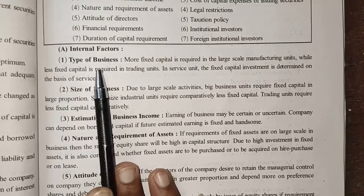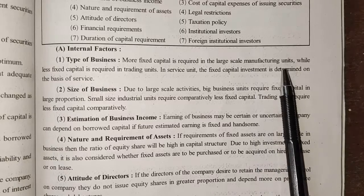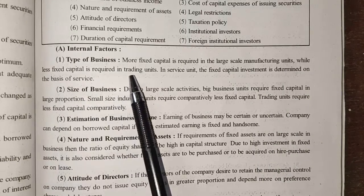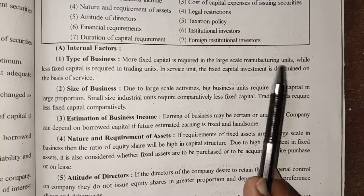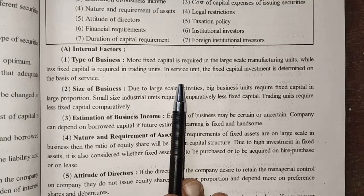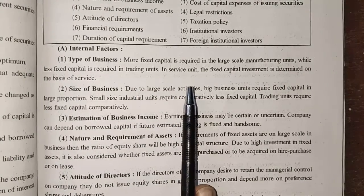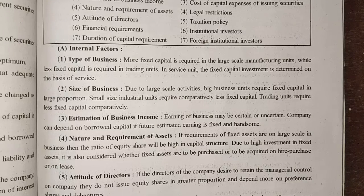Internal factor one: types of business. When the business is a large-scale manufacturing unit, more fixed capital is required — for machinery, land, and so on. Less fixed capital is required in trading units and service units. In service units, the fixed capital investment is determined on the basis of the service provided.